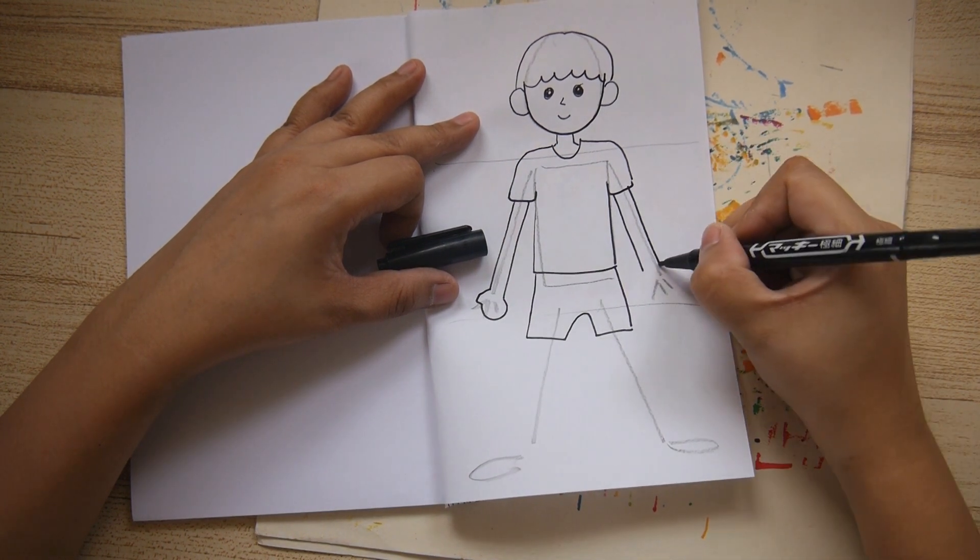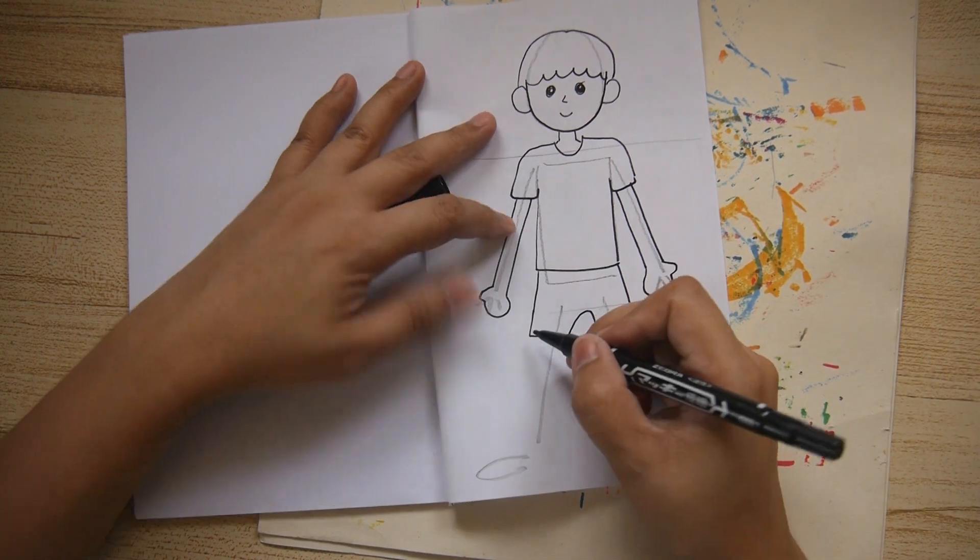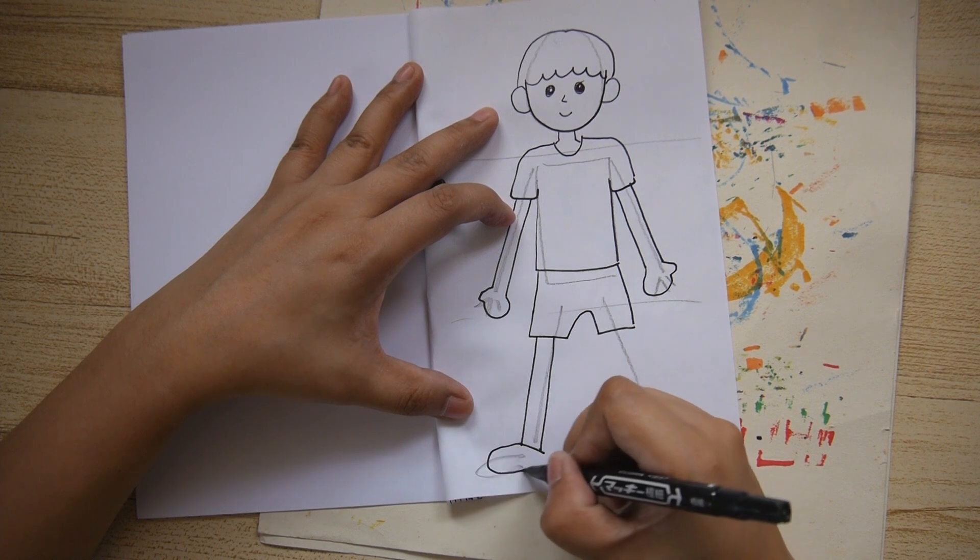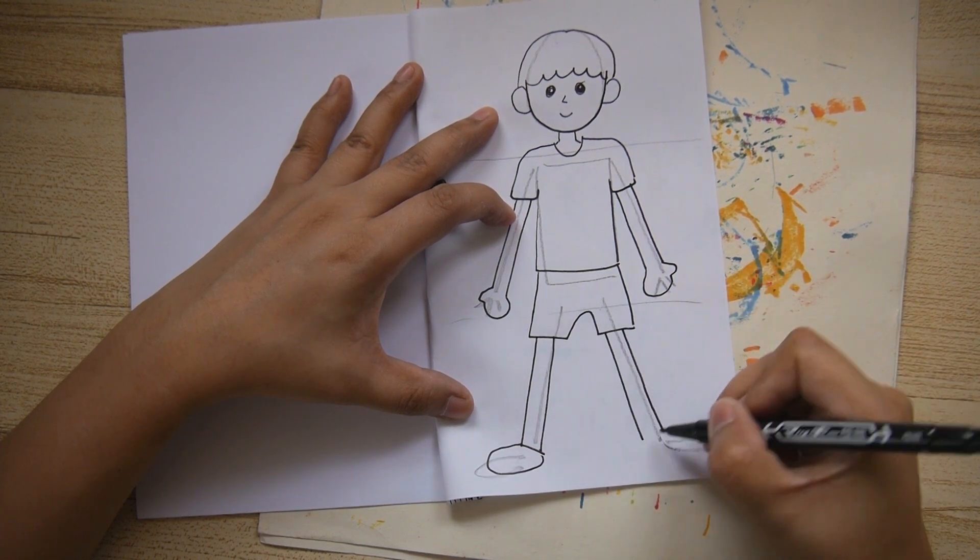Again, two sloping lines connected with the hand. It's the same thing with the legs. They're just sloping lines or diagonal lines. And then add the feet. Feet looks like an oval.